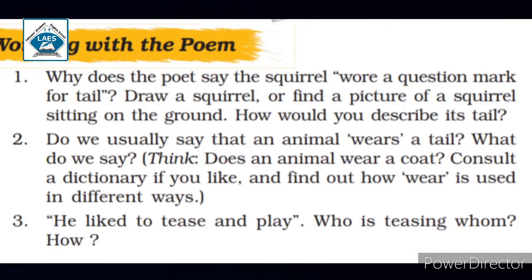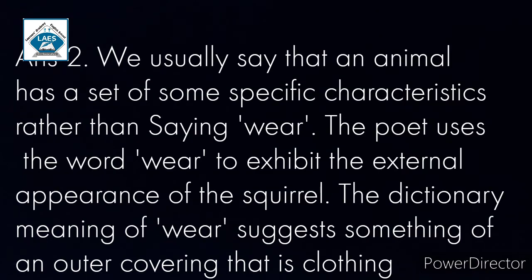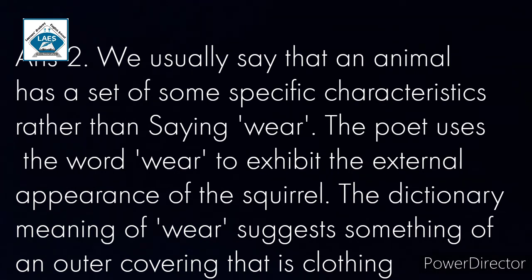Question number two: Do we usually say that an animal wears a tail? What do we say? Answer: We usually say that an animal has a set of some specific characteristics rather than saying wear. The poet uses the word 'wear' to exhibit the external appearance of the squirrel. The dictionary meaning of wear suggests something of an outer covering, i.e., clothing.